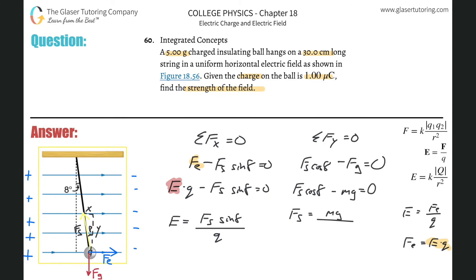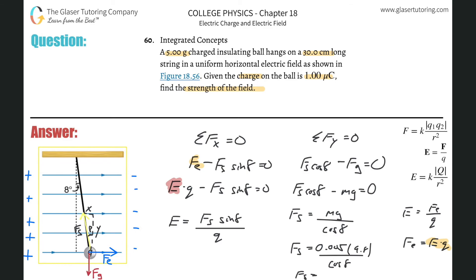We know mass (5 grams = 0.005 kg), gravity (9.8 m/s²), and the angle. Working through both equations simultaneously — a two-track analysis — we can see how they connect. Calculating: 0.005 times 9.8 divided by cosine of 8 degrees gives F_s approximately 0.0495 N. Now plugging that into the expression for E: E equals 0.0495 times sine of 8 degrees divided by one times ten to the minus six.